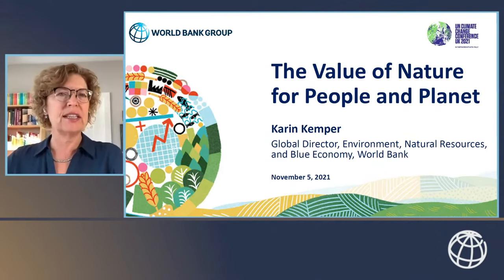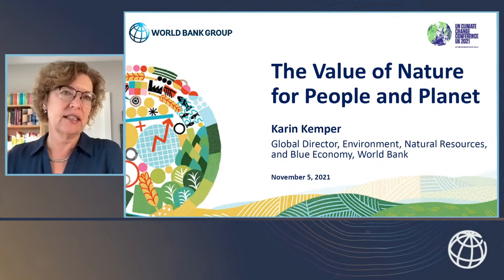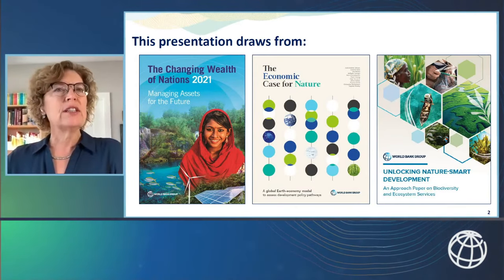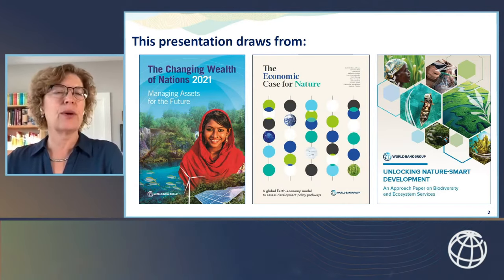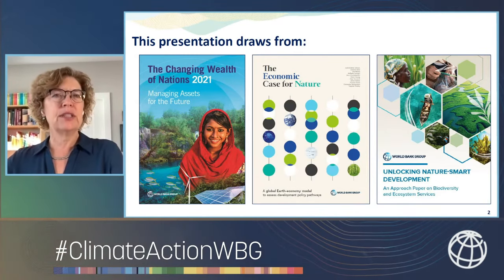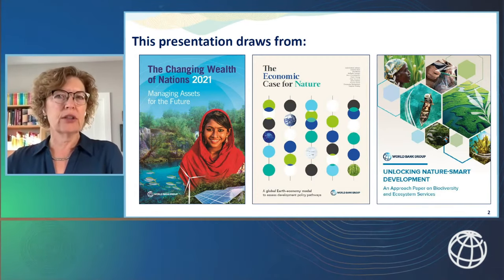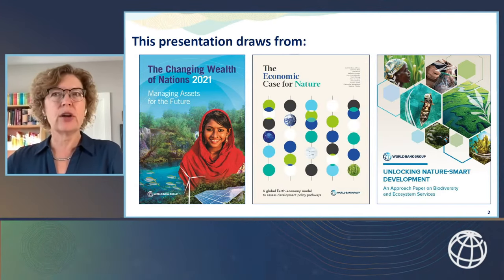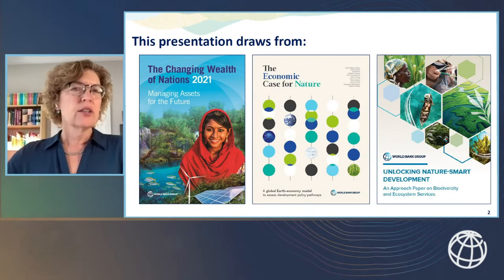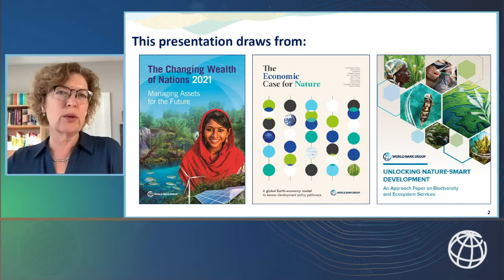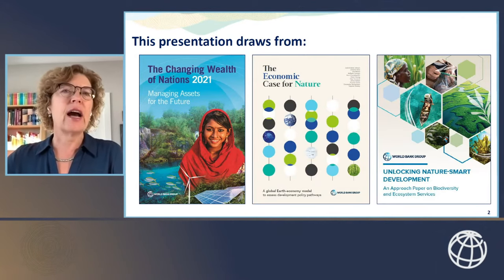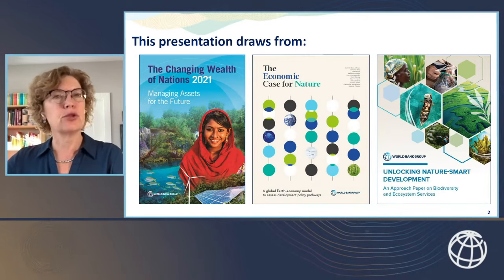A combined approach that enables nature and climate-smart development is needed. To make an economic case for nature, we need data on natural capital, tools to integrate the cost of nature into policy making, and we need to mobilize finance for nature. We have worked to contribute analysis through a series of recent World Bank flagship reports. The Changing Wealth of Nations 2021 produced the most comprehensive global estimates of wealth and natural capital, covering 146 countries from 1995 to 2018.